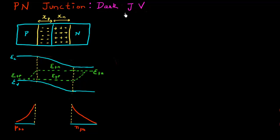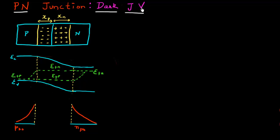In this video, I want to derive the current-voltage relationship for a PN diode. I want to derive it for two cases: one is when there is no light shining on the diode, called the dark IV relationship, and the other is when there is light shining on the diode, appropriately called the light JV characteristics.